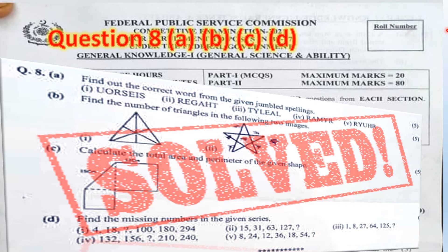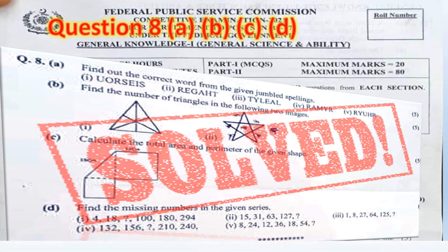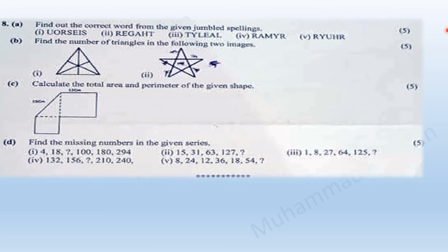Bismillahirrahmanirrahim. Assalamu alaikum aspirants. This is the third video presenting the solutions to question eight of the General Science and Ability paper 2021.